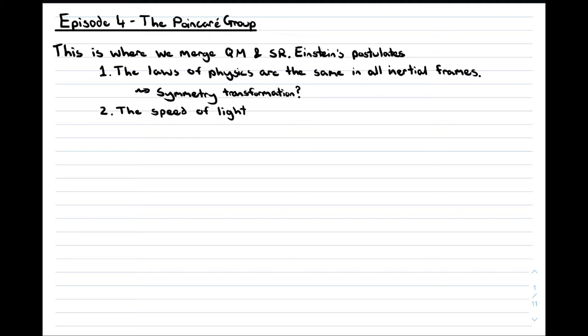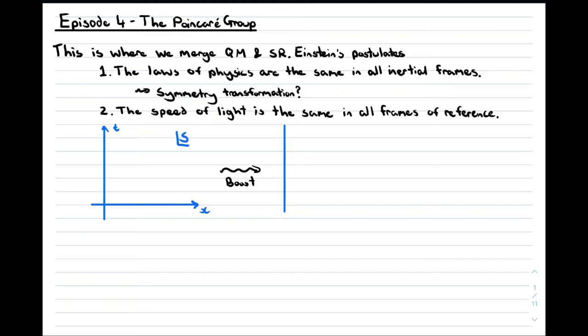Number 2: The speed of light is the same in all frames of reference. Consider a frame of reference S. Suppose we know that S is an inertial frame. Now consider a new frame of reference, S'. If S' is an inertial frame as well as S, then the transformation between these frames is a symmetry transformation.